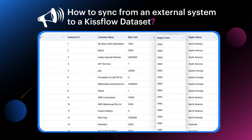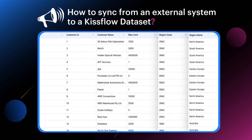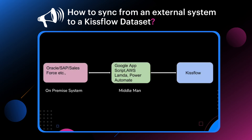Here you can see the region codes are different, but the region names are mapped based on the region codes, and these region names are not available in the CSV file which you are using to import. This can be achieved by using a middleman ranging from Google Apps Script to AWS Lambda Script based on your current infrastructure.